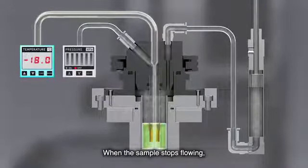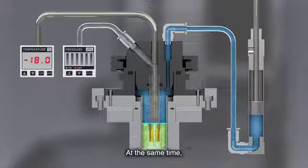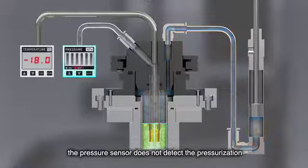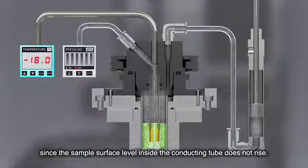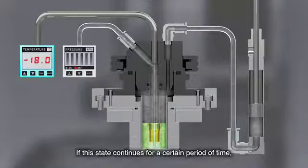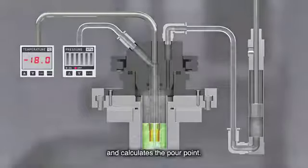When the sample stops flowing, the sample surface level outside the conducting tube does not drop even when pressurized. At the same time, the pressure sensor does not detect the pressurization since the sample surface level inside the conducting tube does not rise. If this state continues for a certain period of time, the device judges that the sample is no longer flowing and calculates the pour point.